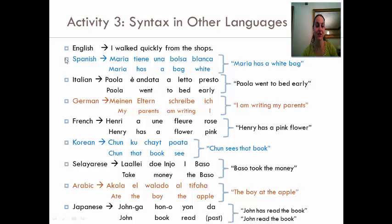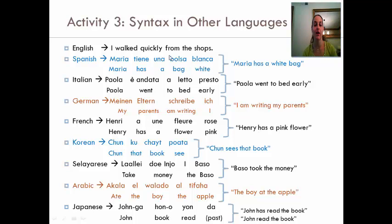For English, we know it's subject-verb-object — SVO — with 'the shops' as the object. In Spanish, Maria is the subject, 'tiene' is the verb, and 'una bolsa blanca' is the object — so SVO. But notice the difference: the adjective 'white' comes before the noun 'bag' in English, but after it in Spanish. Italian is also SVO. In German, it would be object-verb-subject: 'my parents' is the object, 'am writing' is the verb, and 'I' is the subject — OVS.